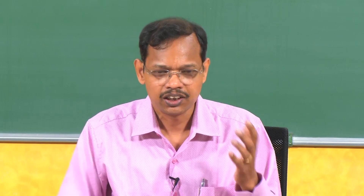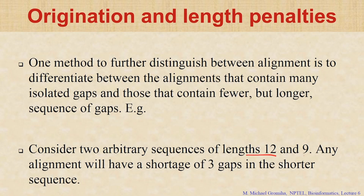So, if we want to take this into account, what do we have to do? We have to give some penalty for originating a gap and a penalty for each gap. If we have 2 sequences, one of 12 residues and one of 9 residues, we have a shortage of 3 residues. We have to introduce 3 gaps — either these 3 gaps can be together or we can separate them. If we have homologous sequences and some residues are missing at the N-terminal or C-terminal, we can keep these 3 residues at one place. So in this case we give penalty based on where we introduce the gaps.